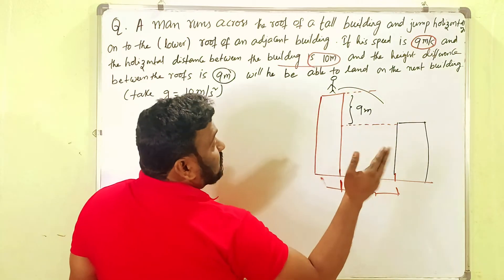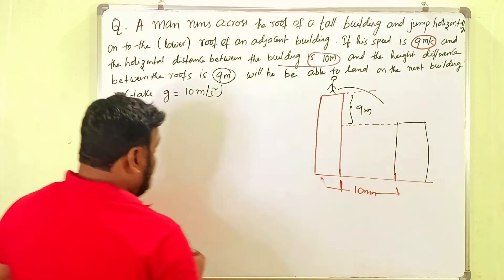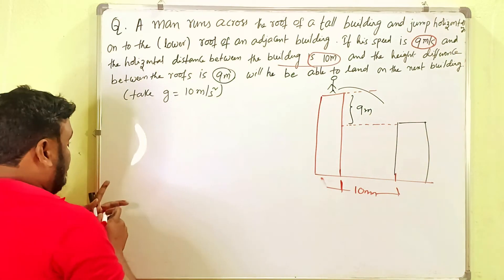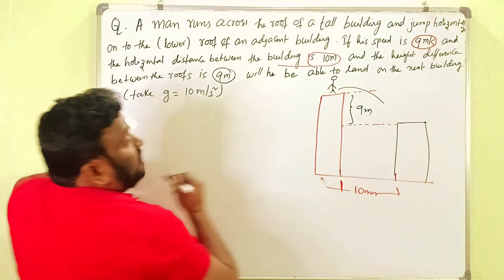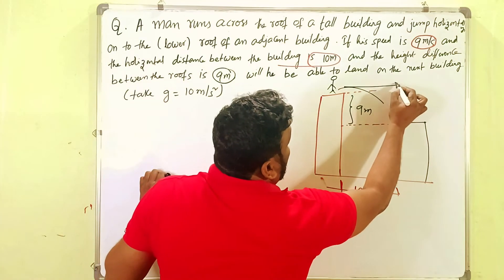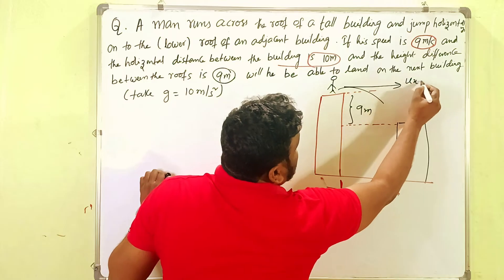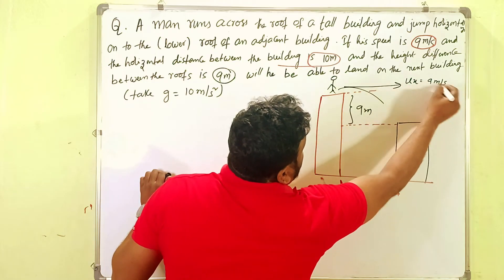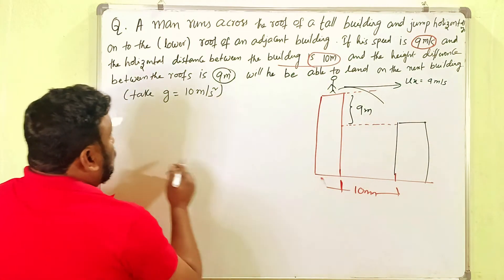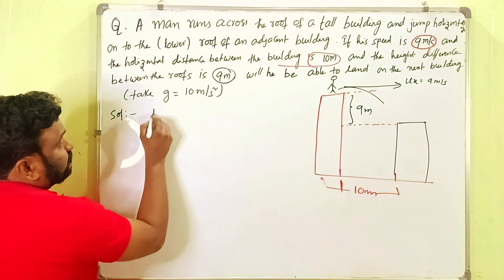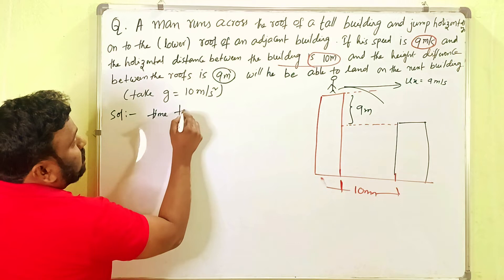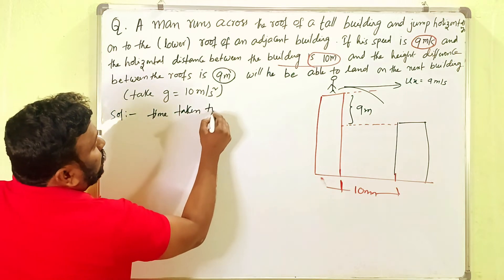Now we need to find if he can land on the building or not. When he is jumping, there is some horizontal velocity, that is 9 meters per second. So we need to find the time taken to reach the other building.